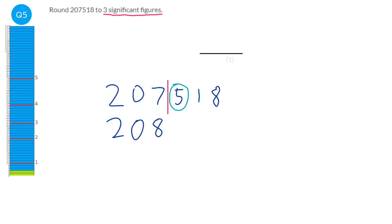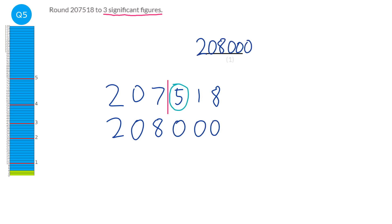A common mistake is that students write down 208. No — all the numbers to the right of the line turn to zero, so the answer is 208,000 exactly.